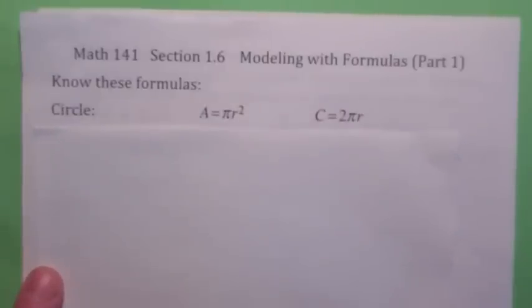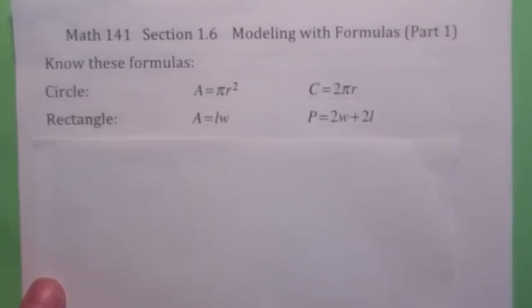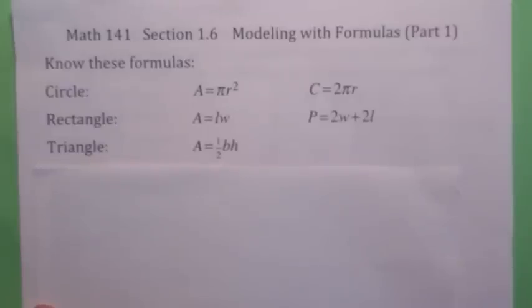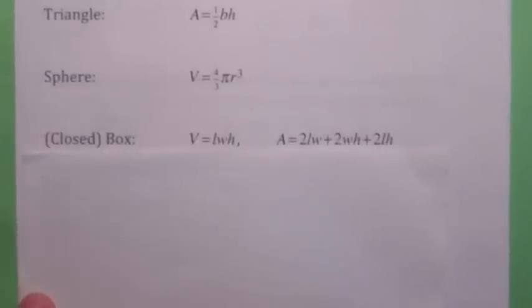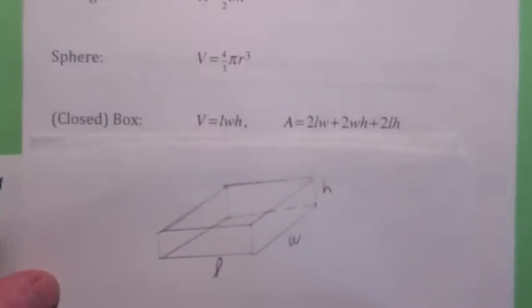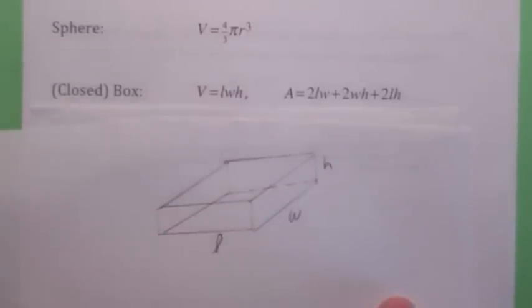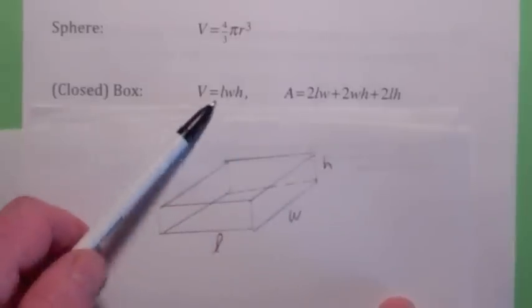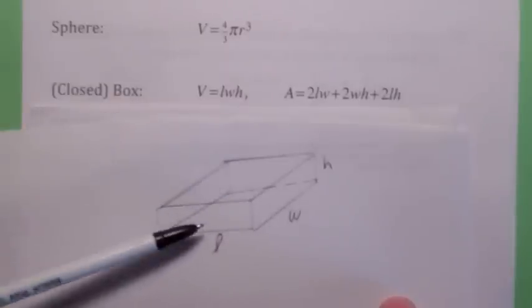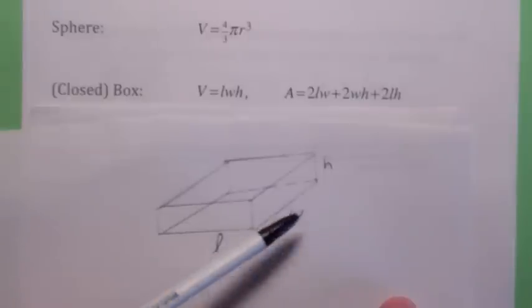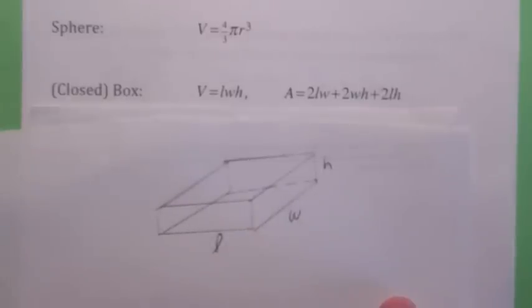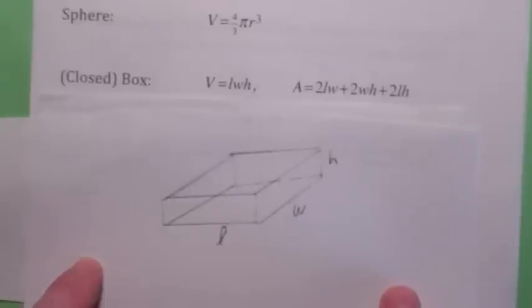Everyone should know the area and circumference of a circle, the area and perimeter of a rectangle, the area of a triangle, the volume of a sphere, and the volume and surface area of a box. Assuming it's a closed box, the volume is the length times the width times the height. The surface area has two of each side: two length times widths, two widths times heights, and two length times heights.